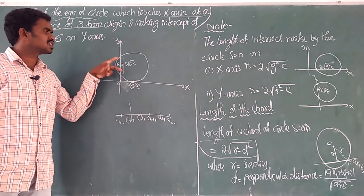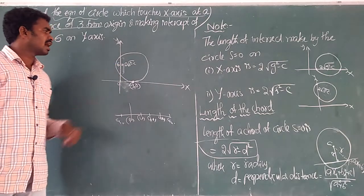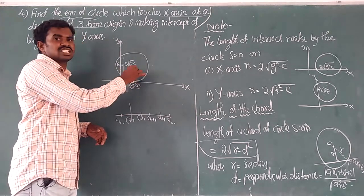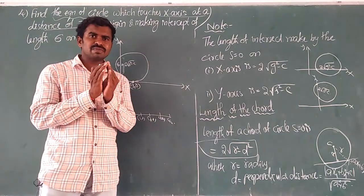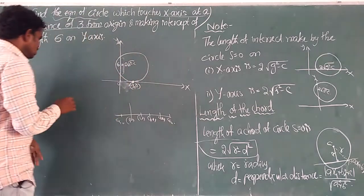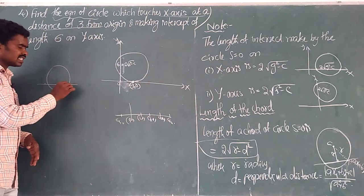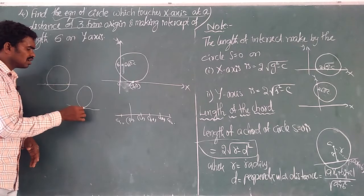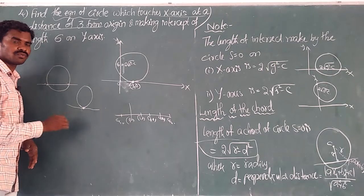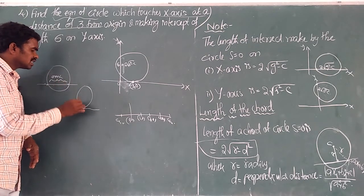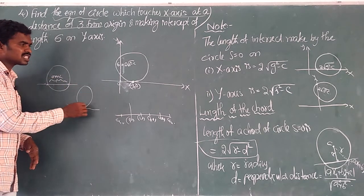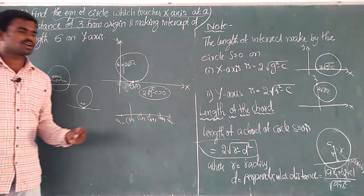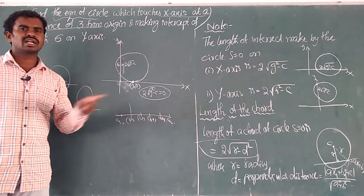See the difference: if it touches, it is not an intercept. If it intercepts, it is not a touch. If the circle is tangent at a point, there is no intercept — the distance (intercept) is 0. So the length on x-axis: 2√(g² − c) = 0. So with these 3 key points — passing through (3,0), x-intercept = 0, y-intercept = 6 — we can solve the problem.